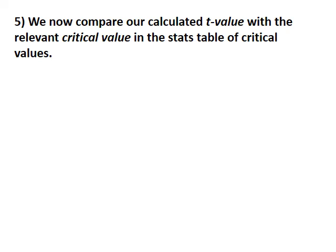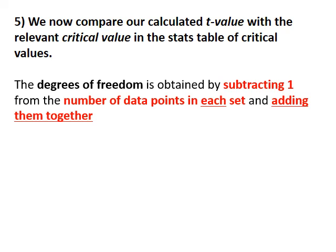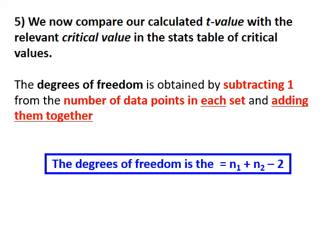Now that we have our t-value, we compare it to a critical value from a statistics table. The degrees of freedom is calculated by taking the number of measurements in dataset one minus 1, added to the number of measurements in dataset two minus 1. In this case, that is 15 plus 15 minus 2, which gives degrees of freedom of 28. We'll need that value to read off the critical value table.